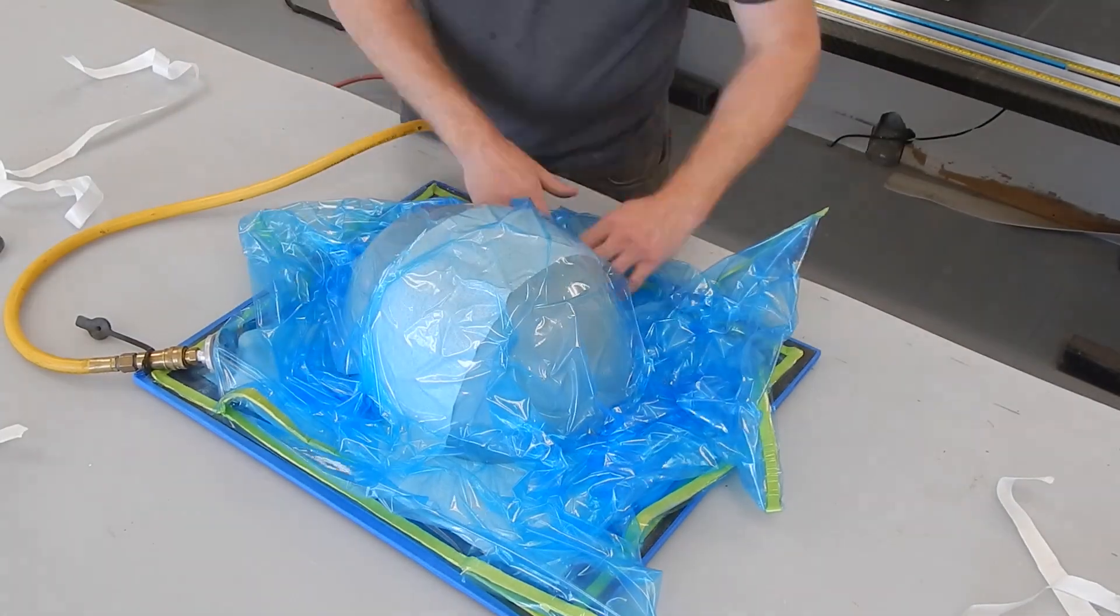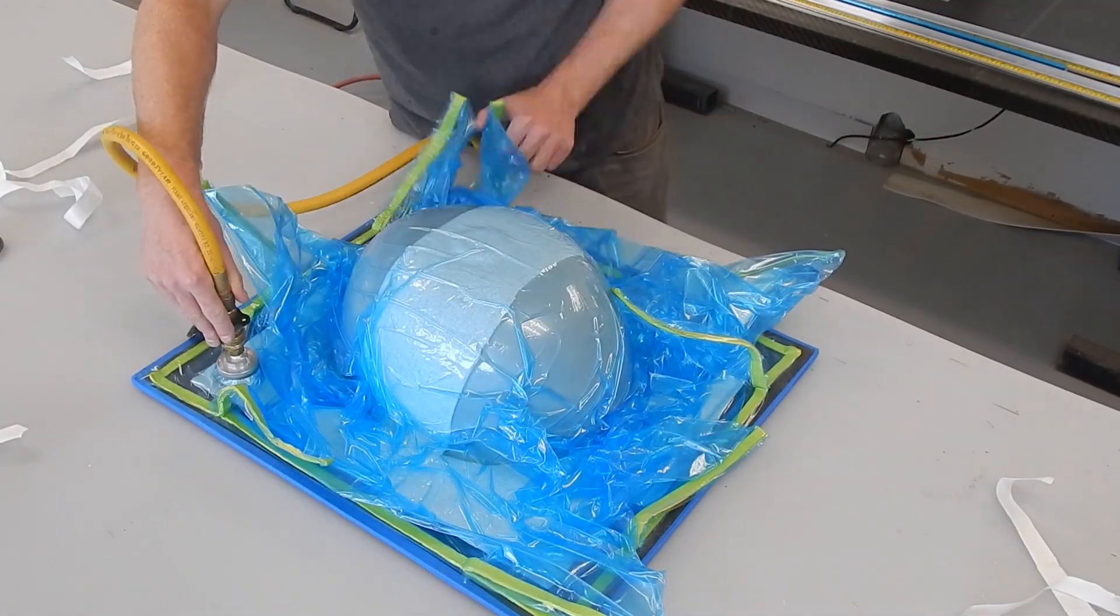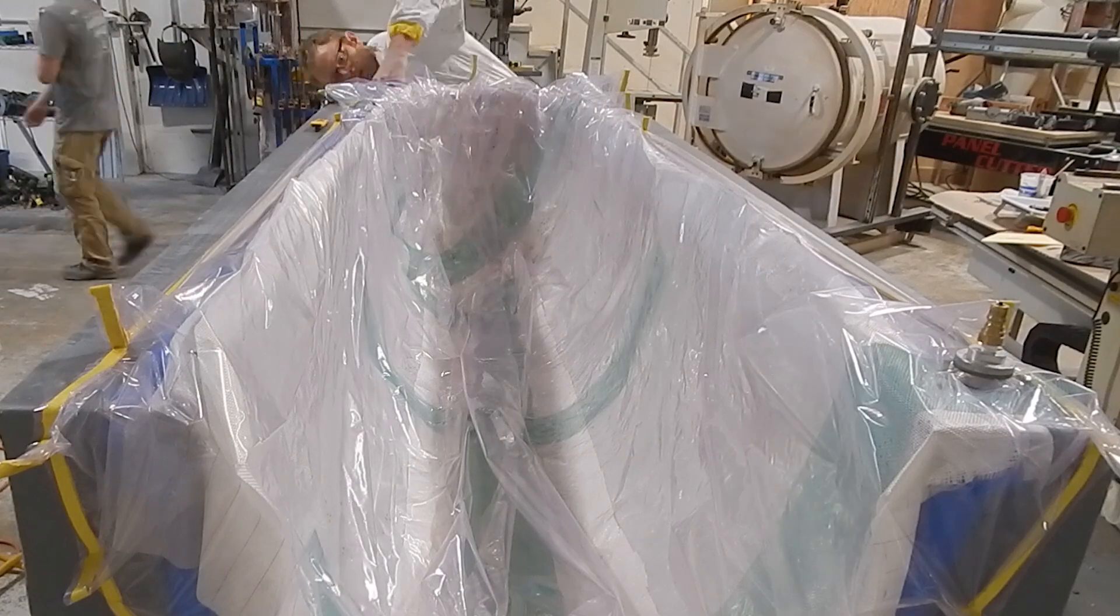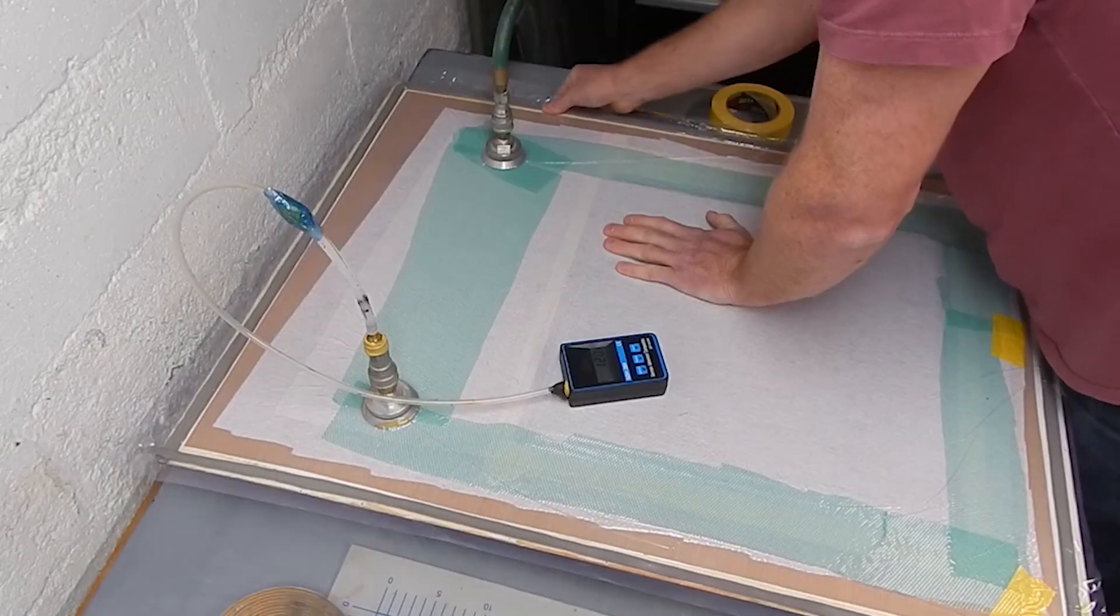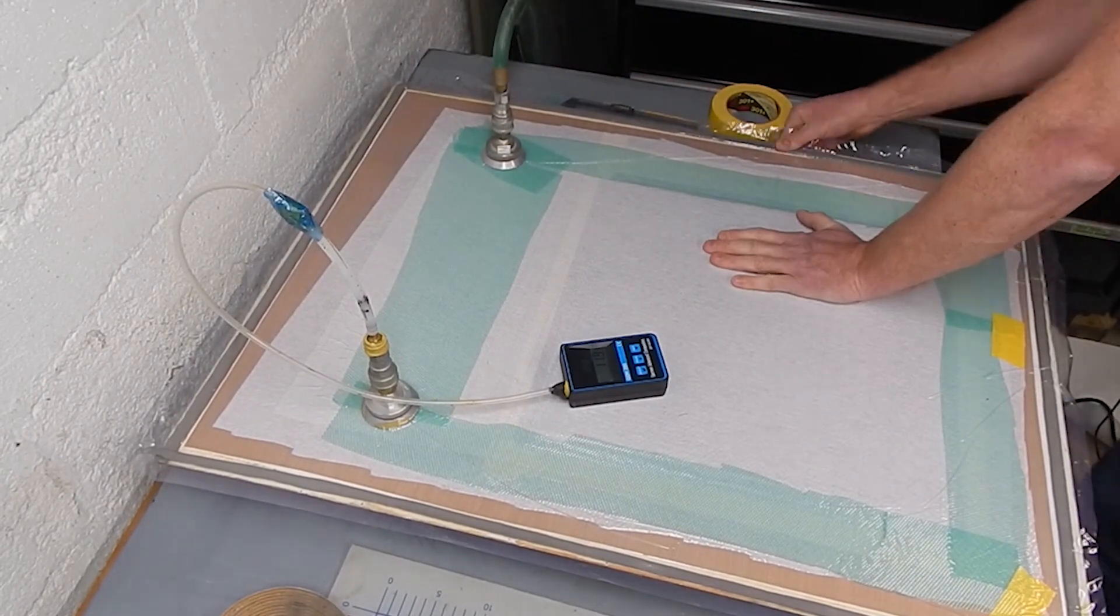For a lot of composites technologies, vacuum is an essential part of the process. There aren't really any other good ways to apply huge amounts of pressure to large irregularly shaped areas.